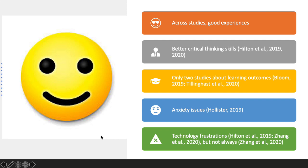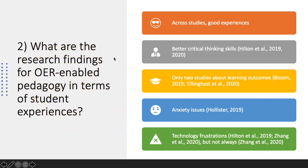Only two studies examined learning outcomes, and they were neither good nor bad. Tilly and Haston colleagues 2020 and Bloom 2019 compared course sections with open pedagogy to those with more traditional assignments. The two approaches differed — Tilly and Haston had students revise an existing OER textbook, while Bloom had students develop OER learning tools — but their findings on student learning outcomes were similar. Bloom noted that increases in writing mechanics knowledge appeared larger for the open pedagogy group, but the difference was only marginally significant, possibly due to the relatively small sample.